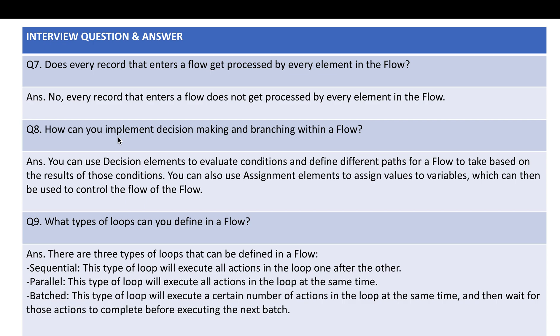How can you implement decision making and branching within a Flow? You can use decision elements — based on some condition using boolean values (true/false), you can take a specific action. For example, if age is greater than 21 then the person is eligible to vote. Or when saving a record, if age is more than 18, send an email notification. These kinds of branching decisions can be created in Flow.